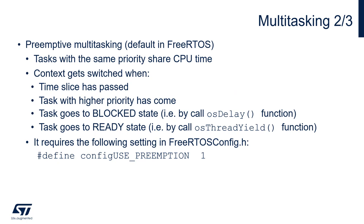The next configuration is the preemptive one, which is the default within FreeRTOS. Within this configuration, tasks with the same priority share CPU time. Context can be switched when the task's time slice has passed, a task with higher priority has come, a task goes to blocked state by calling osDelay function, or a task goes to ready state, for example by calling osThreadYield function. To activate this mode, it is needed to set configUSE_PREEMPTION to one within the FreeRTOSConfig.h file.